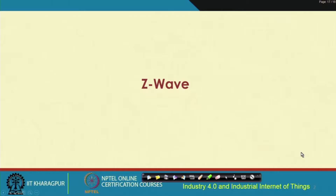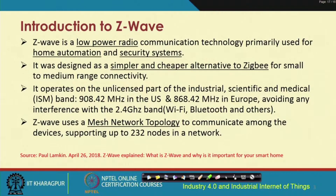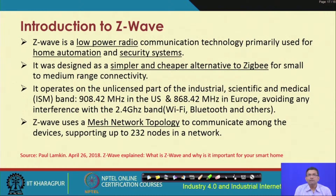One of these technologies is Z-Wave, which is a very popular technology. This protocol is particularly useful for home automation applications, security systems, and so on. Like the other 802.15.4-based technologies, the applications require low power radio communication.